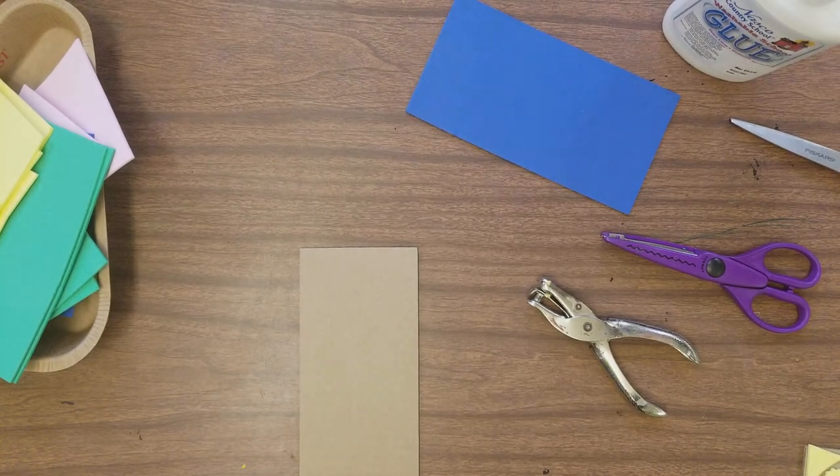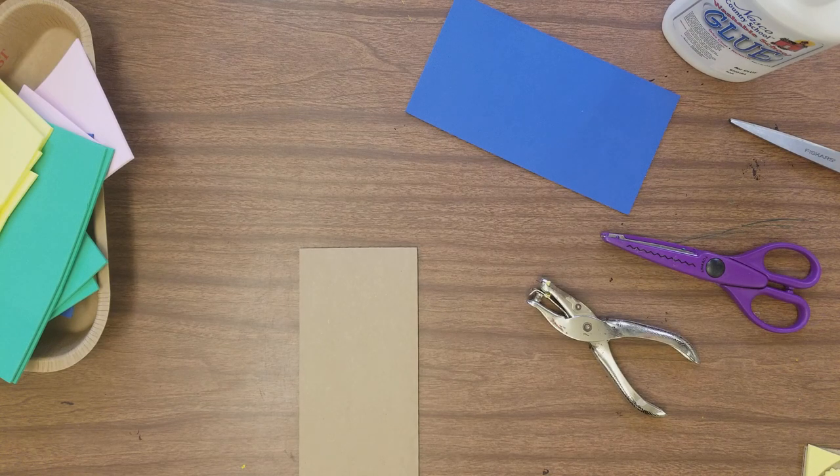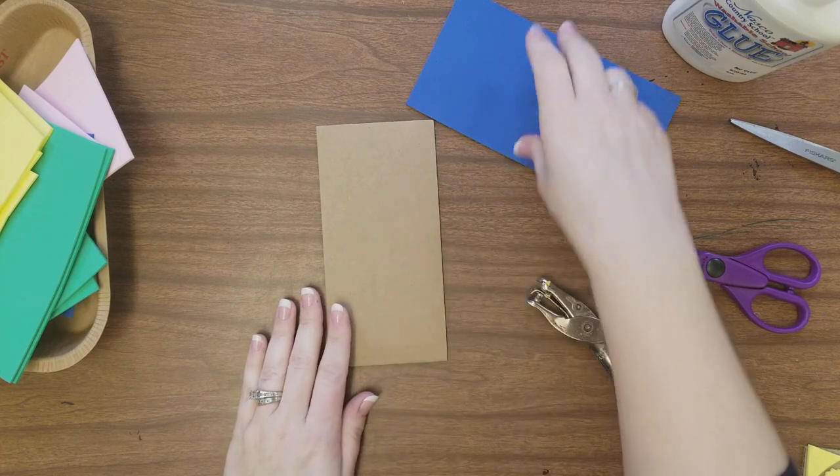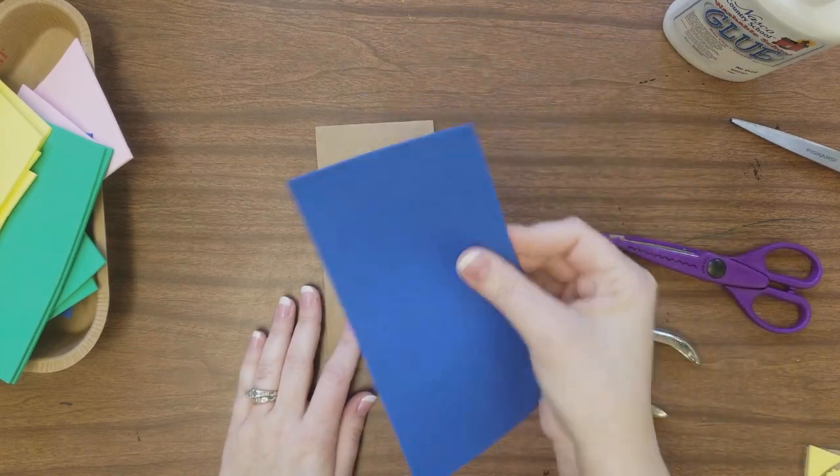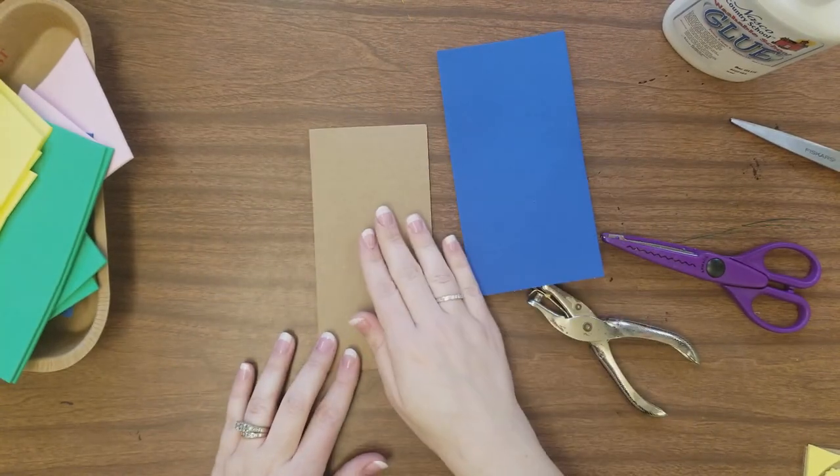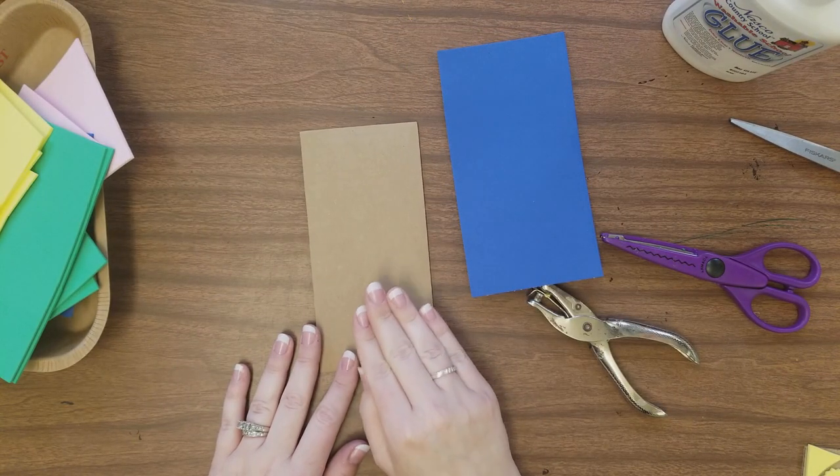Hello everyone! Today we're going to be creating a collagraph. A collagraph is a type of printmaking process where we are cutting out materials from foam. We're going to glue the foam onto cardboard, and then later use this piece to print with.